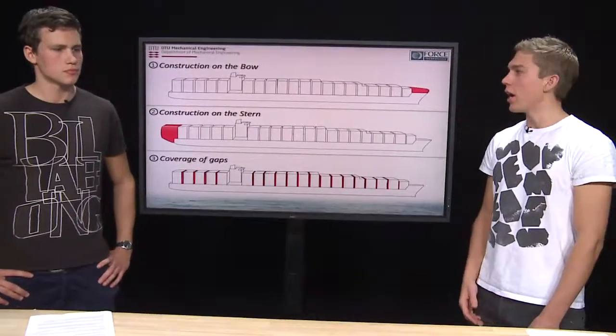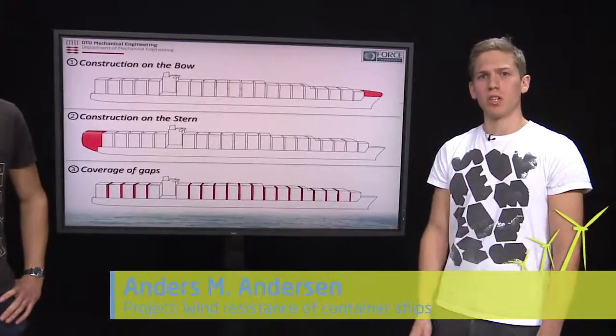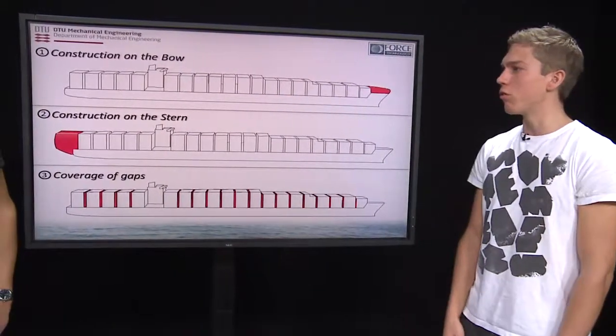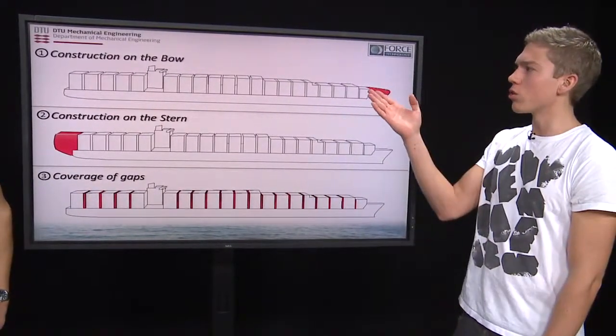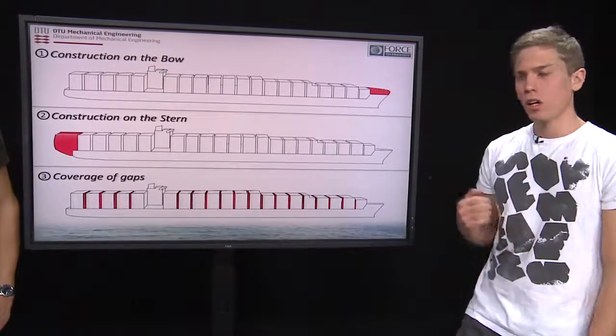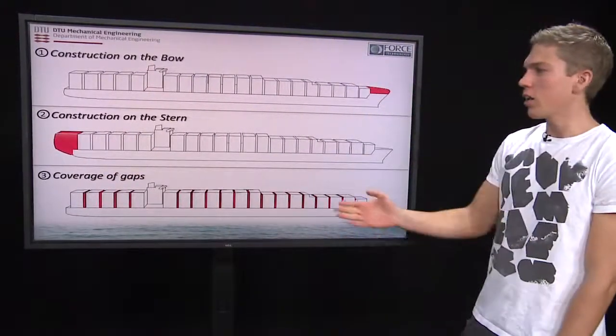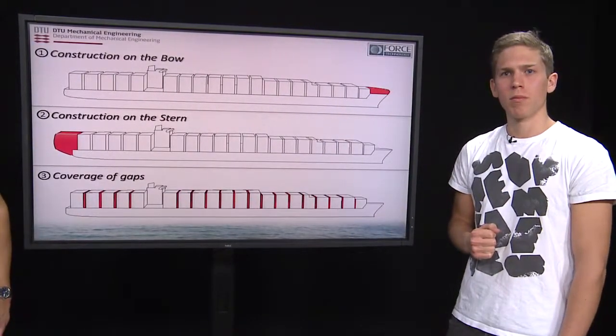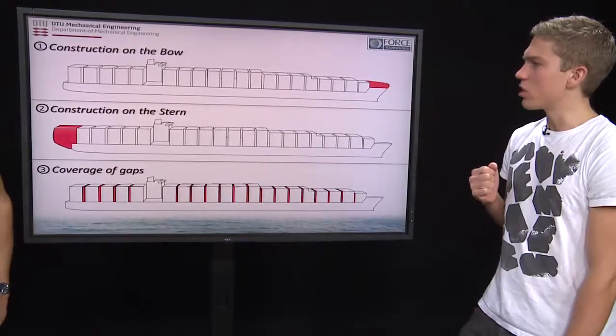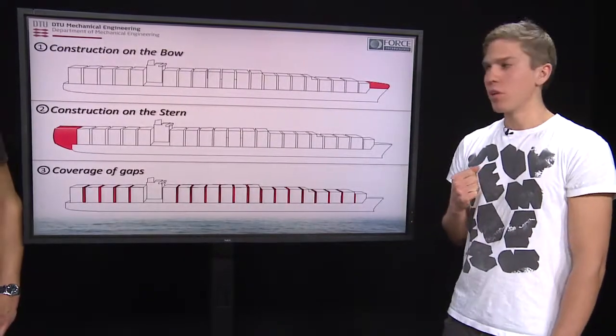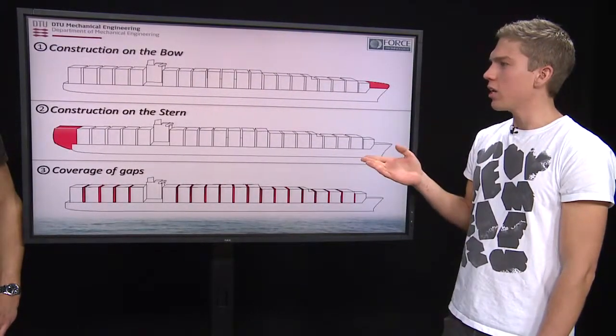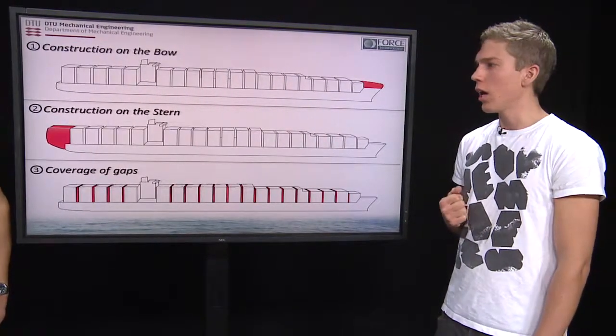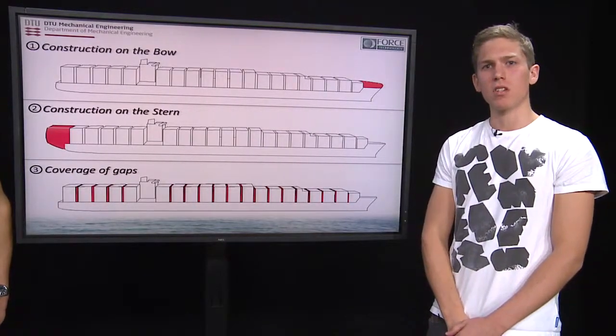The aim of this project has been to add constructions to an existing container ship. We have limited our investigations to three different focus areas: constructions on the bow of the ship, constructions at the stern of the ship, and coverage of the gaps between the containers. The shapes of these constructions have been made from previous investigations within this field and our knowledge of fluid mechanics and aerodynamics.